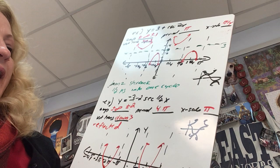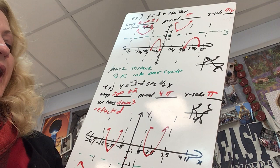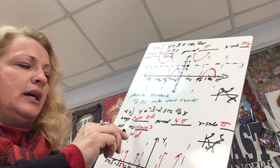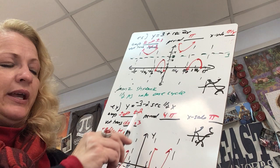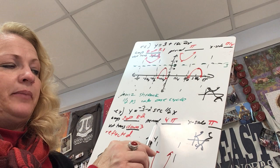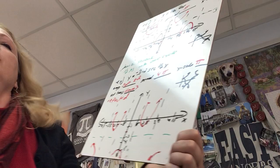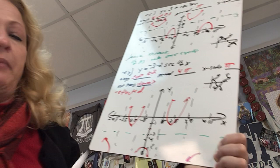Last example: y equals negative three minus 2 secant of (1/2)x. Listing the parameters: technically the amplitude is plus or minus infinity, but my relative maxes and mins will be two away from the horizontal axis. The period is two pi divided by one-half, which is 4 pi. Dividing by 4 gives an x-scale of pi, so counting by pi makes it easy. This graph is vertically translated down three.